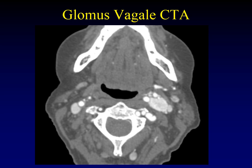On CT angiography, once again a very vascular tumor — essentially as vascular as the surrounding arteries and veins. Notice how the internal and external carotid arteries are both being pushed forward and not splayed apart. What's being splayed away is the internal jugular vein.